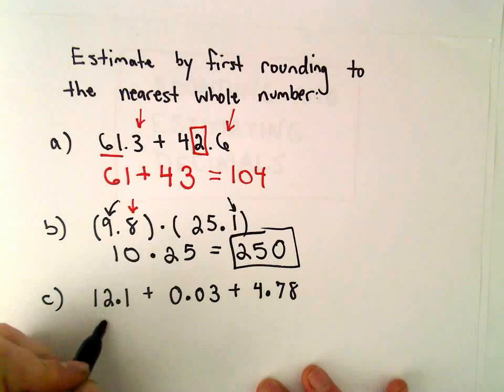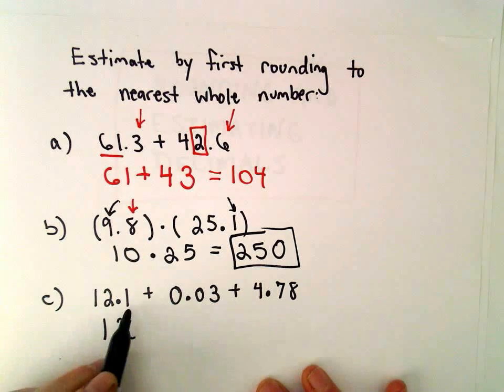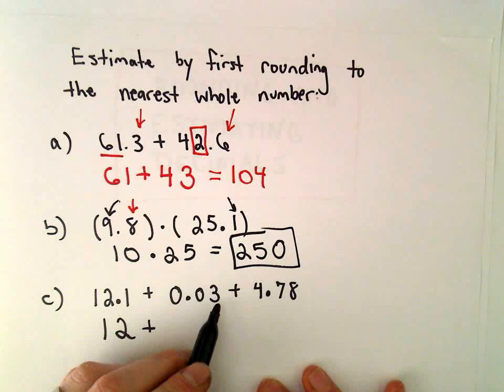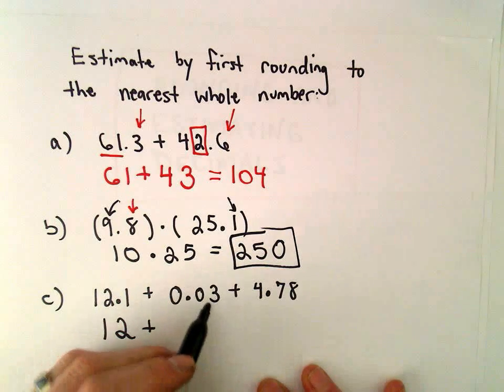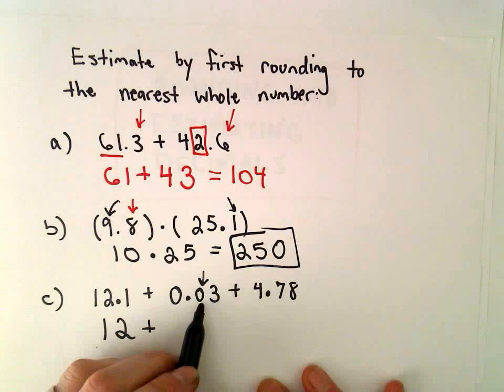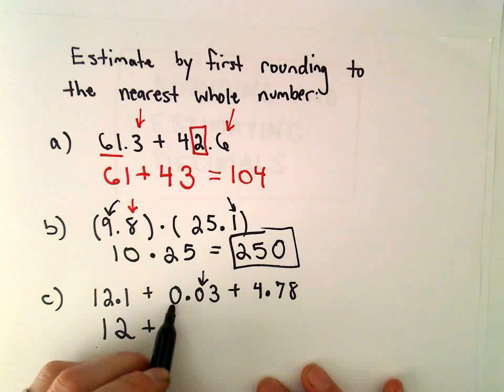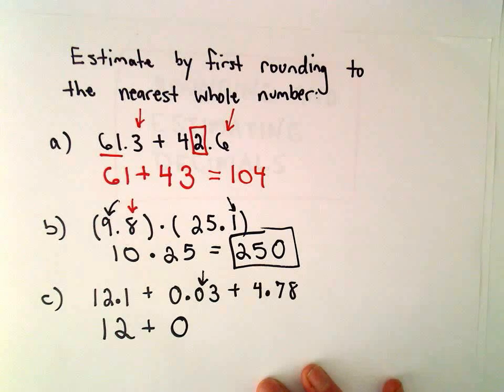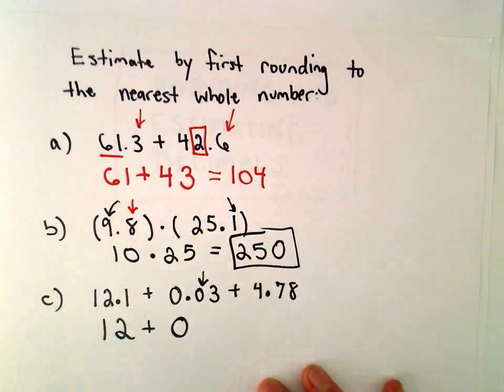We'll get 250 as our estimate. Okay, 12.1, that's certainly going to be closest to 12. If you think about the whole number 0.03, what whole number that's closest to, well, since the tenths digit, 0, is 4 or smaller, it says we don't do anything to the whole number. So we're just going to round that. We're going to estimate it as being 0.